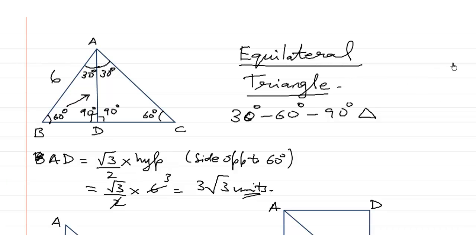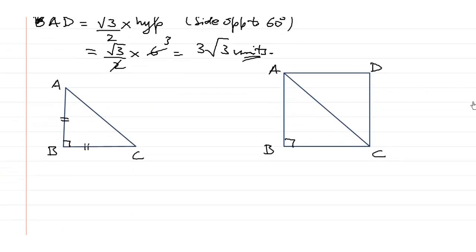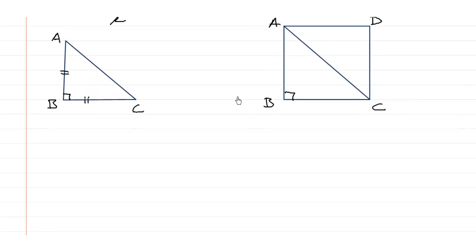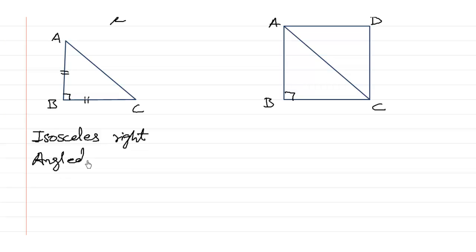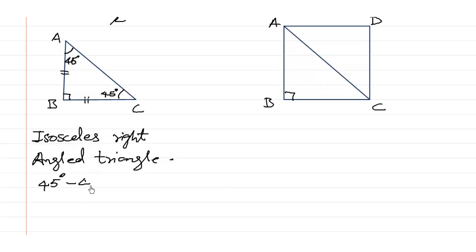So remember, 30, 60, 90 triangles are used in equilateral triangles. Similarly, if you are given an isosceles right angle triangle — where AB and BC are equal and angle B is a right angle — the base angles are automatically 45 degrees each. So isosceles right angle triangles are nothing but 45, 45, 90 degree triangles, and you can apply the 45, 45, 90 theorem.